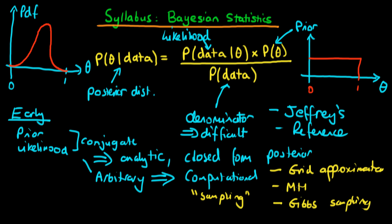We're also going to make use of Bayesian statistical software which is open source. In particular, to do Gibbs sampling, we're going to use a software program called BUGS. It's a really nice and intuitive way of actually doing Bayesian statistics in practice when the particular assumptions which underlie Gibbs sampling methods are abided by. That's the early part of the syllabus.